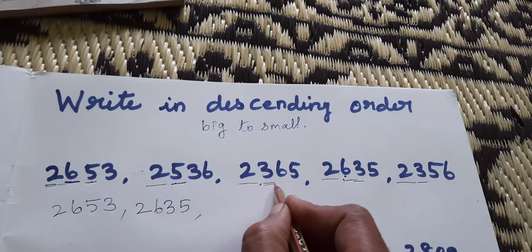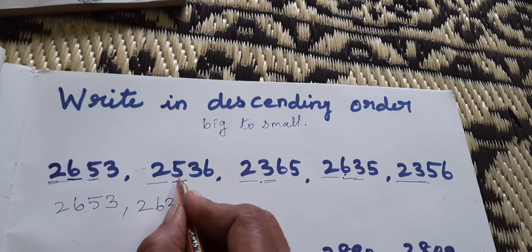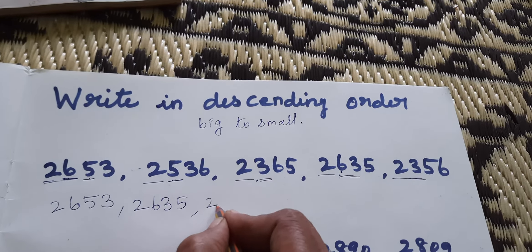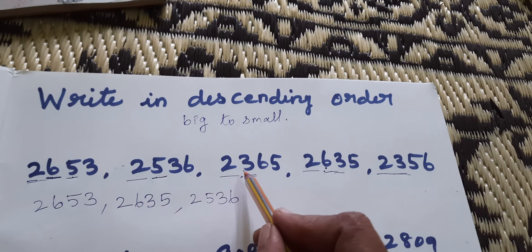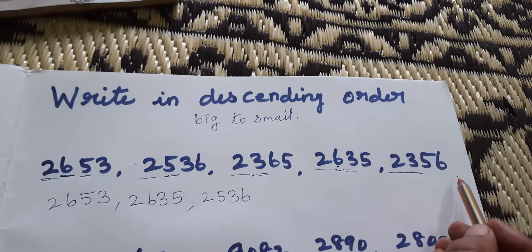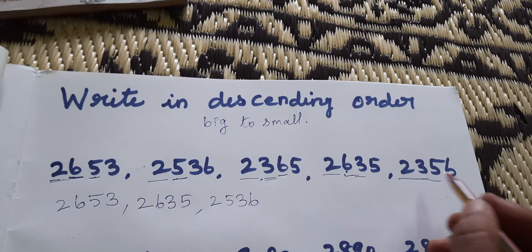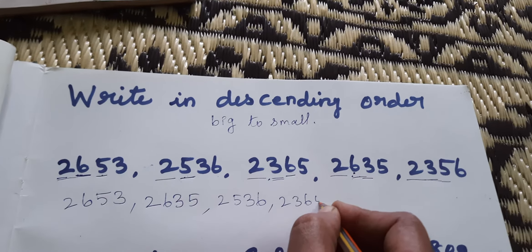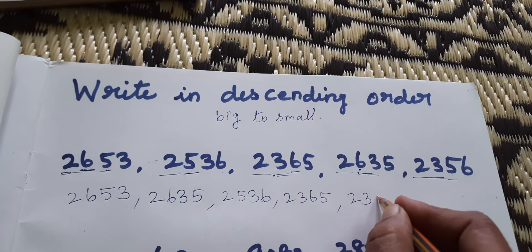Tens place: 5 or 3? 5 is the biggest number. So 2536 is next. Then between 2365 and 2356, tens place: 6 or 5? 6 is the bigger number. So 2365 comes next, and last is 2356.